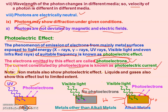An important point: non-metals also show the photoelectric effect, but the photoelectric effect in metals is of higher quality compared to non-metals. Even liquids and gases also show this effect, but only to a limited extent. Not all special liquids or gases can emit electrons when light energy is incident on them.